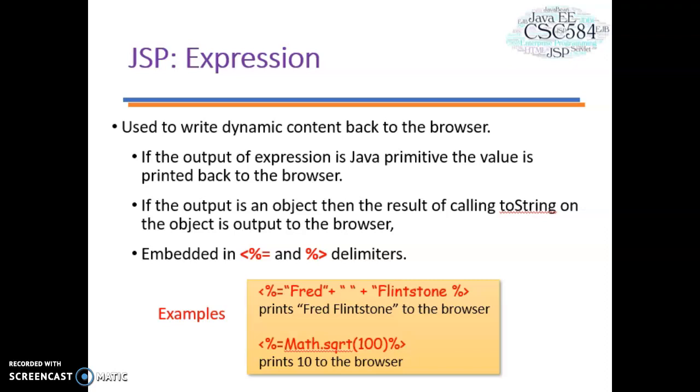If the output is an object, then the results of calling toString on the object is output to the browser. The scripting elements are embedded in this syntax: start tag percentage with equal and then you have the expression of Java code here and then close by the close tag with the percentage sign just before the close tag.